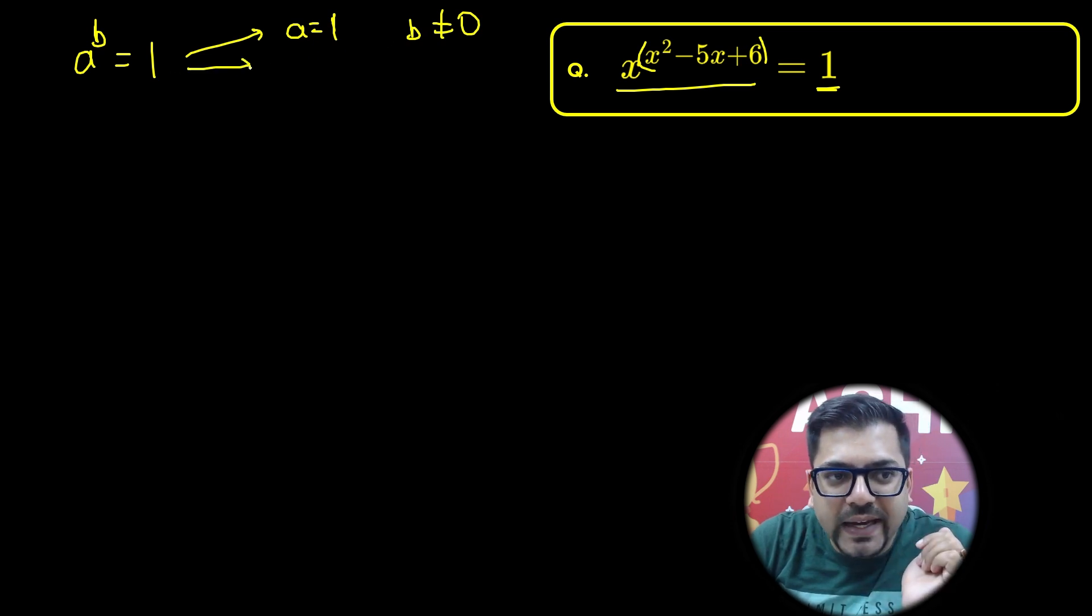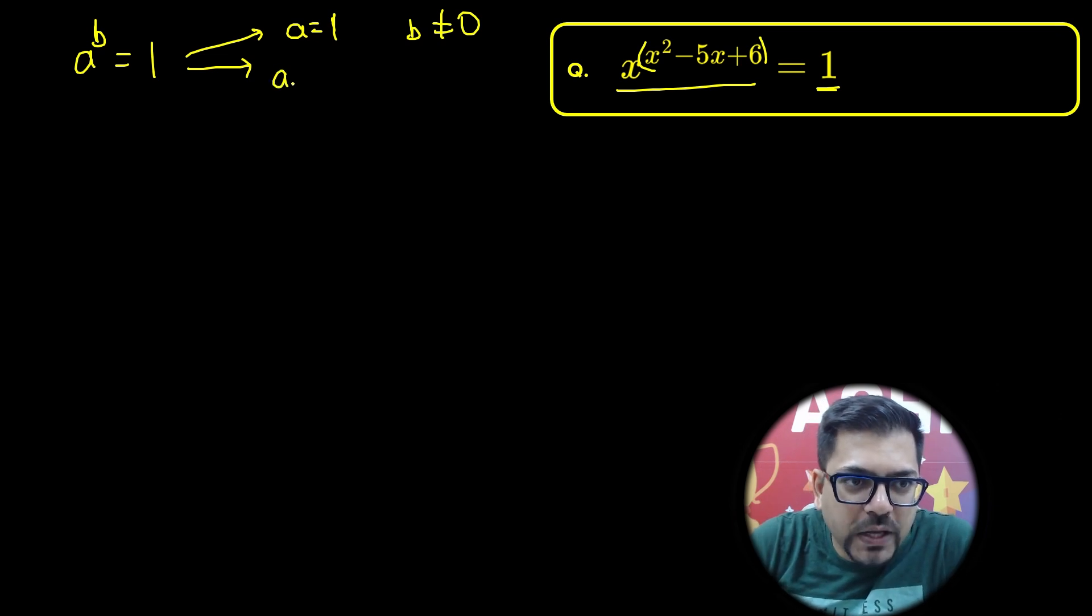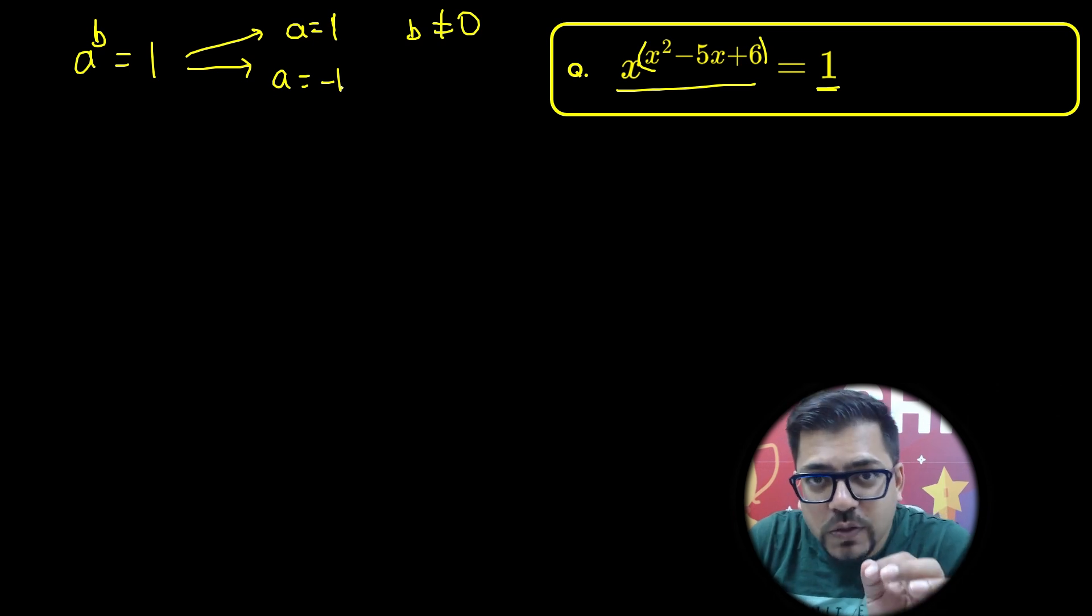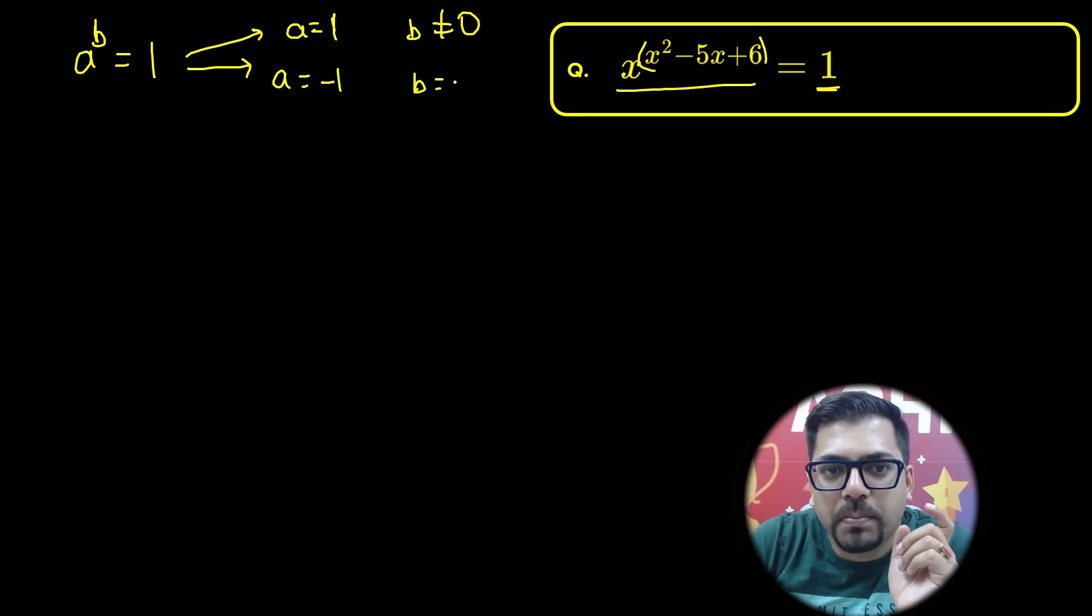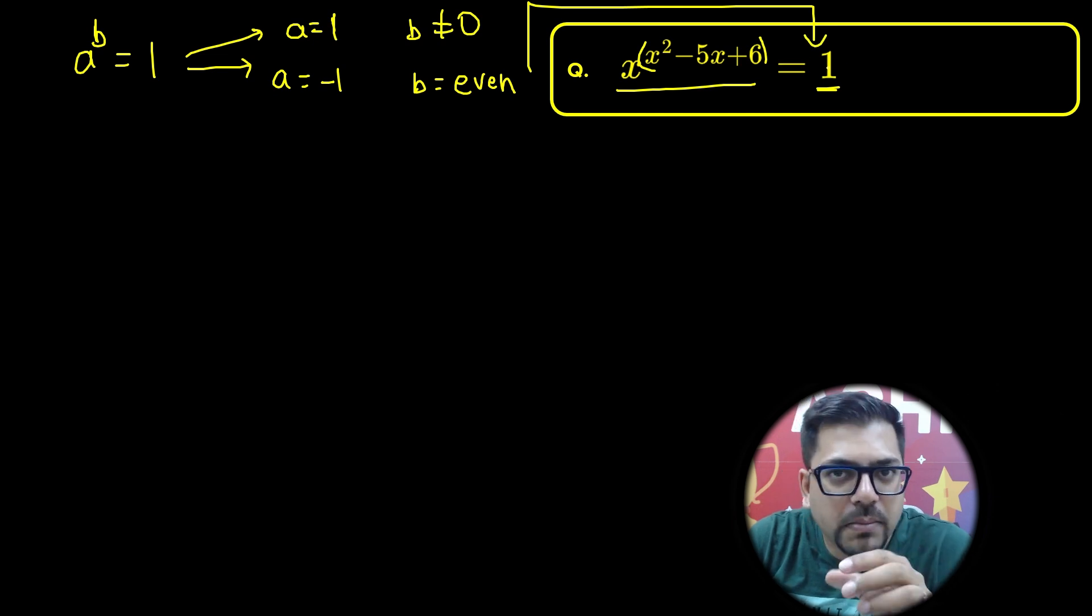Now the second solution is that a could equal minus 1. This is also one possibility, because whenever a equals minus 1 and at that time your b is even, this possibility will also satisfy that the number is going to be 1.